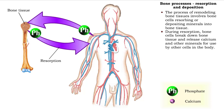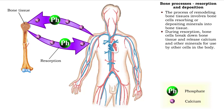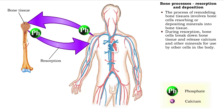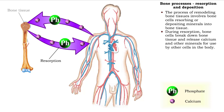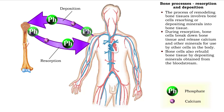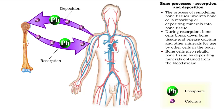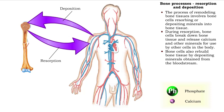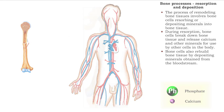In resorption, bone cells break down and release calcium and other minerals into the bloodstream. To build up bone tissue and maintain homeostasis, bone cells deposit minerals obtained from the bloodstream.